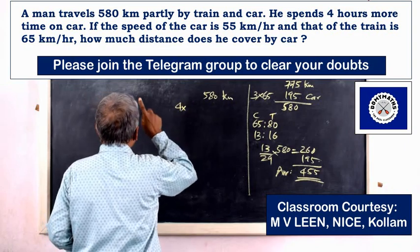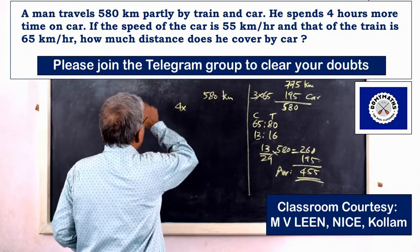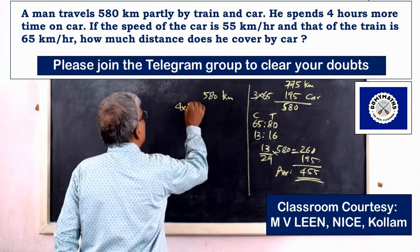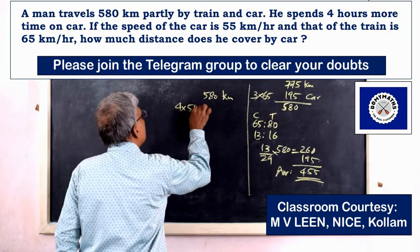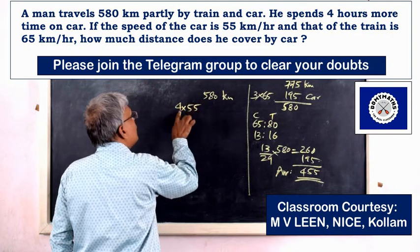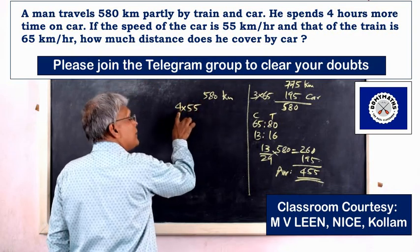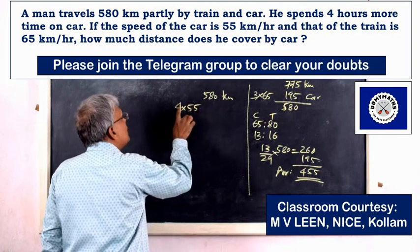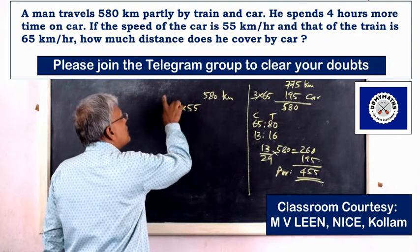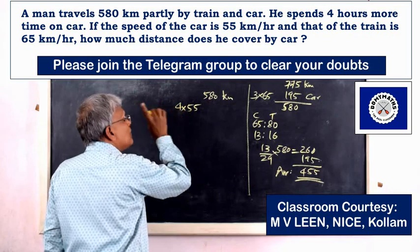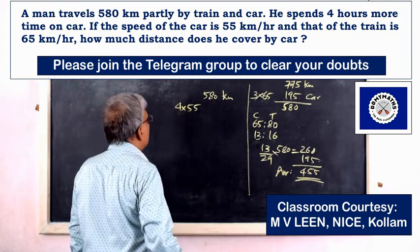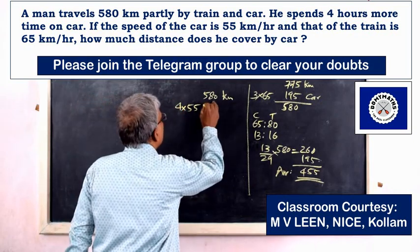The speed of the car is 55 km/h. At equal time, the car distance would be 55T. The total relevant distance is 455 km.